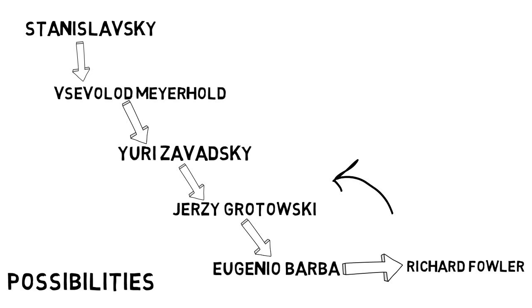Possibilities. The particular transmission of theatre practice I received runs from the well-known Russian director and teacher, Stanislavski, to director Vsevolod Meyerhold, to actor Yuri Zavadsky, to Polish director Jerzy Grotowski, to Italian director Eugenio Barba, to my teacher, Richard Fowler, a Canadian actor, director, and teacher. The heritage of this lineage of artists emphasises two things.